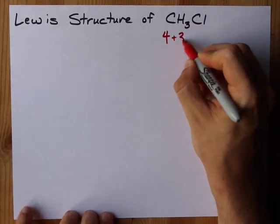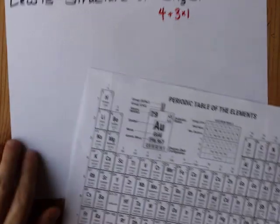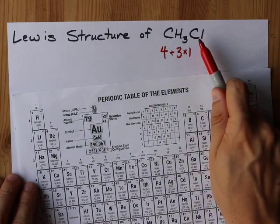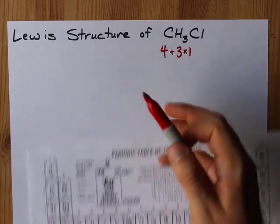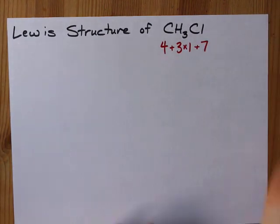Three hydrogens is three singles, because hydrogen in the first column brings one valence electron. And chlorine is a halogen, so it brings seven. All the halogens bring seven valence electrons with them. There we go.